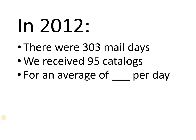So the first thing we need to do is figure out the average per day. Grab your calculator: 95 divided by 303 works out to about 0.31. So about a third of a catalog per day on average — 0.31 per day.